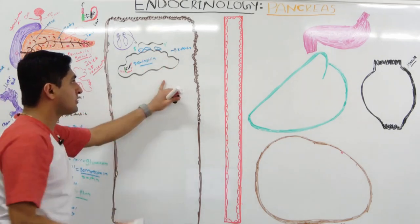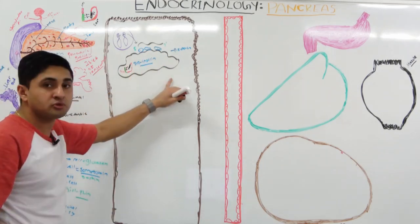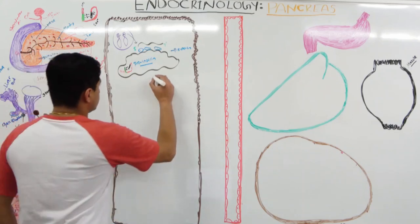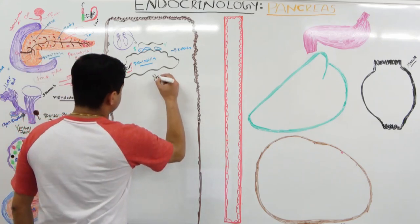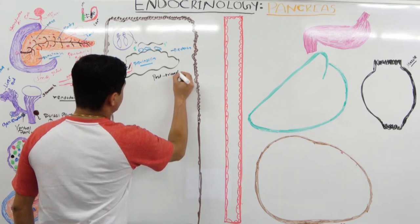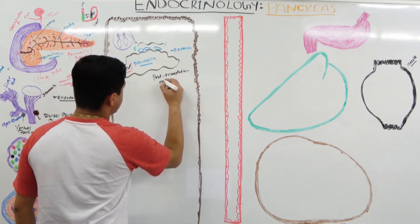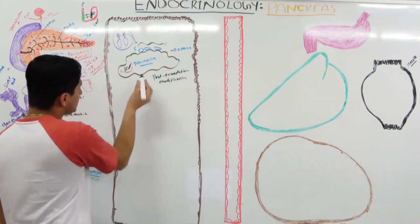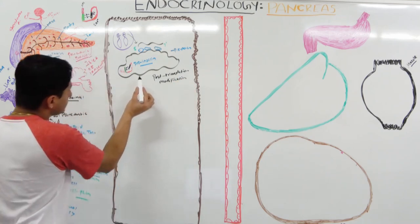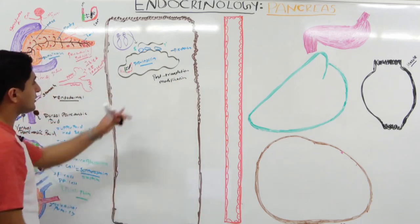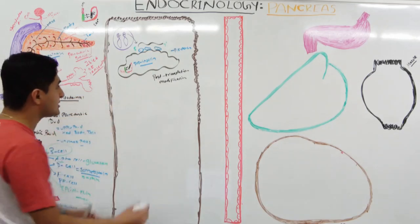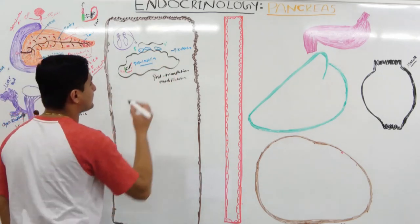Inside the endoplasmic reticulum, the proinsulin undergoes post-translational modifications. Endopeptidase enzymes are located here and they further cleave the proinsulin.